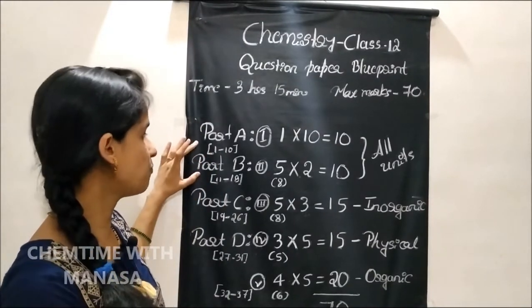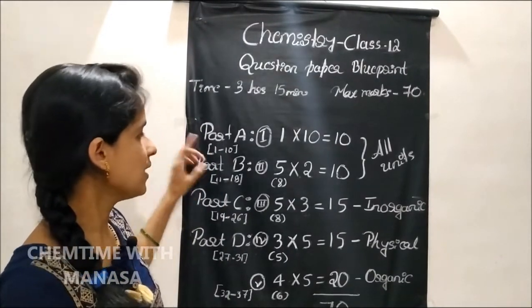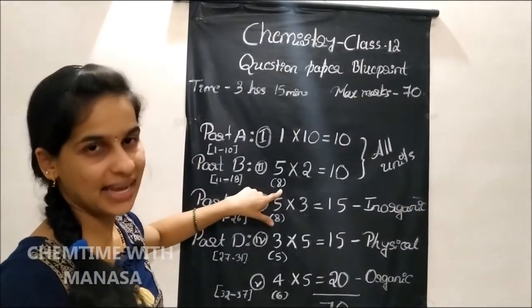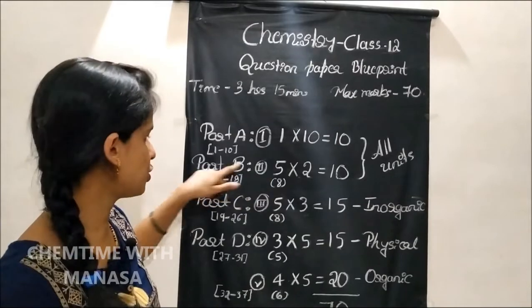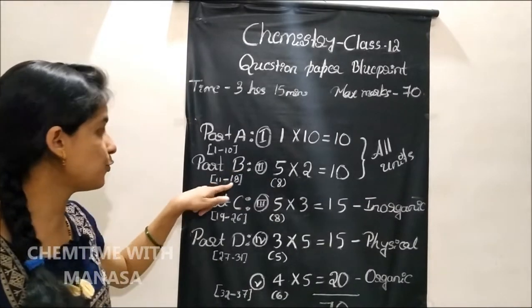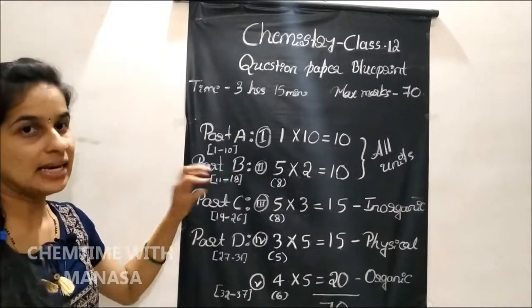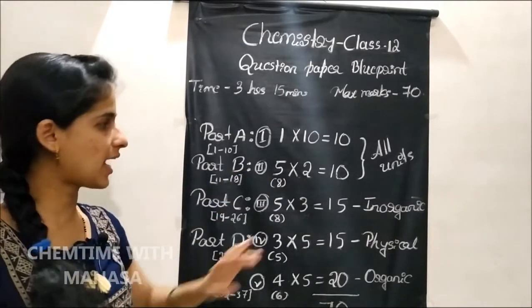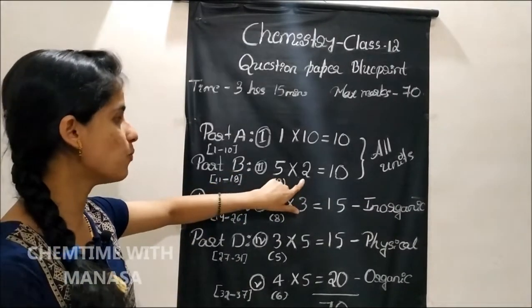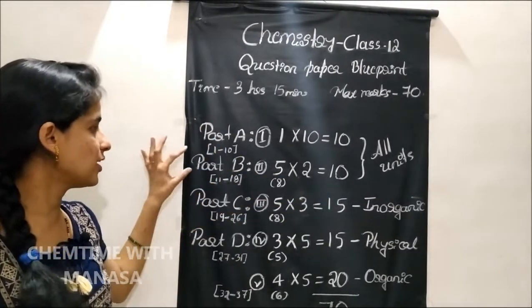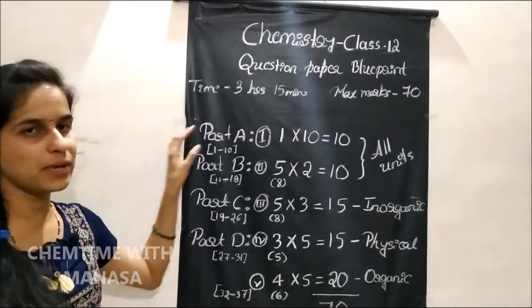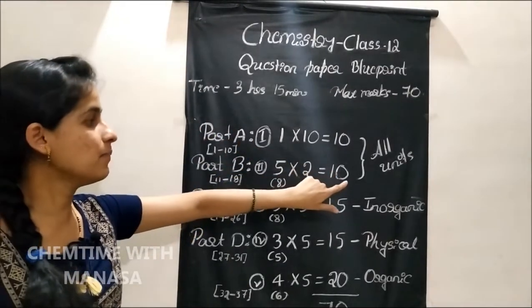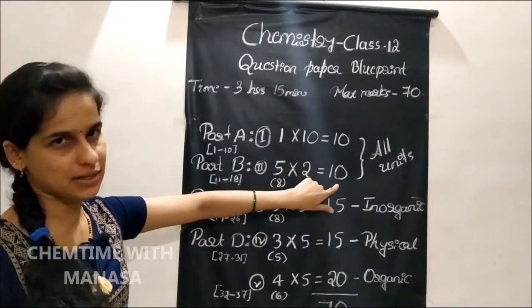Then Part B. In case of Part B, there will be 8 questions — question number 11 to 18 — each question carrying 2 marks. So in case of Part B, there will be 10 marks.